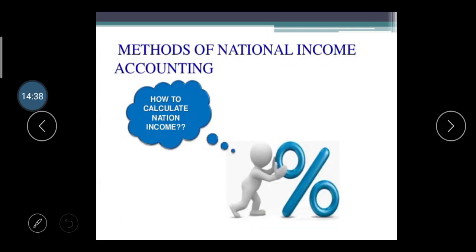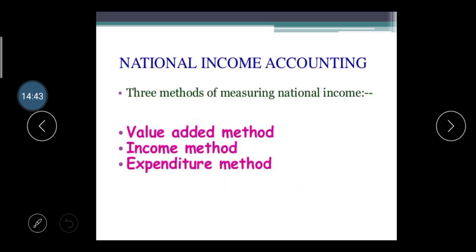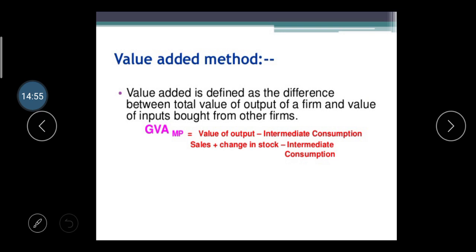There are mainly three methods of calculating national income. The first is the Value Added Method. Value added is defined as the difference between the total value of output of the firm and the value of inputs bought from other firms. The formula is: GVA at market price = Value of Output − Intermediate Consumption + Changes in Stock.